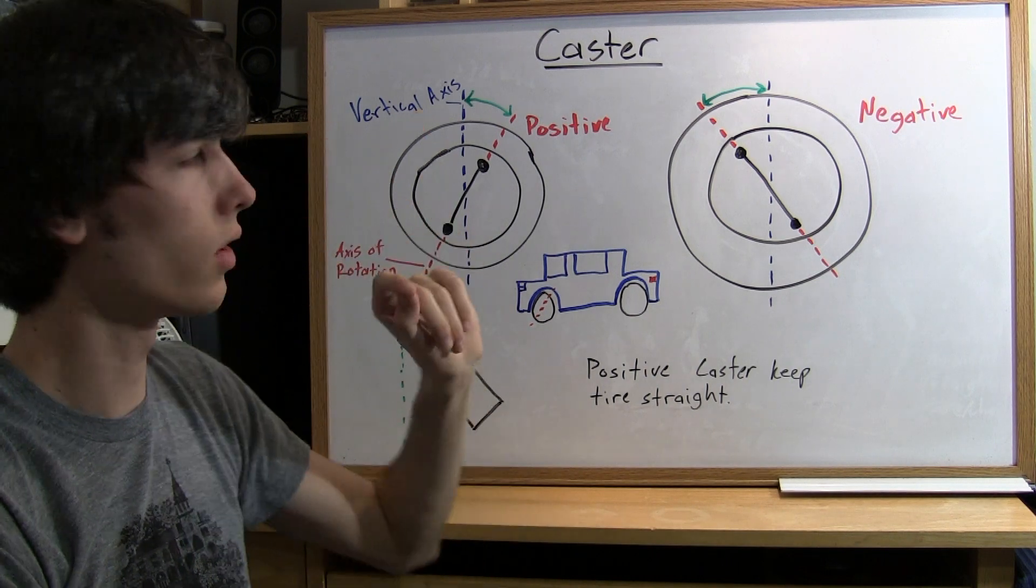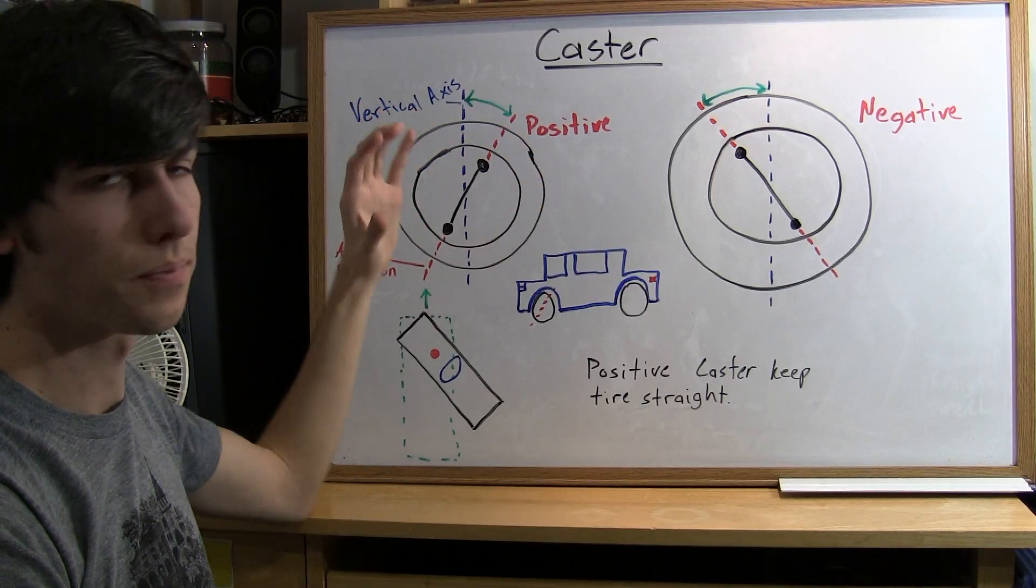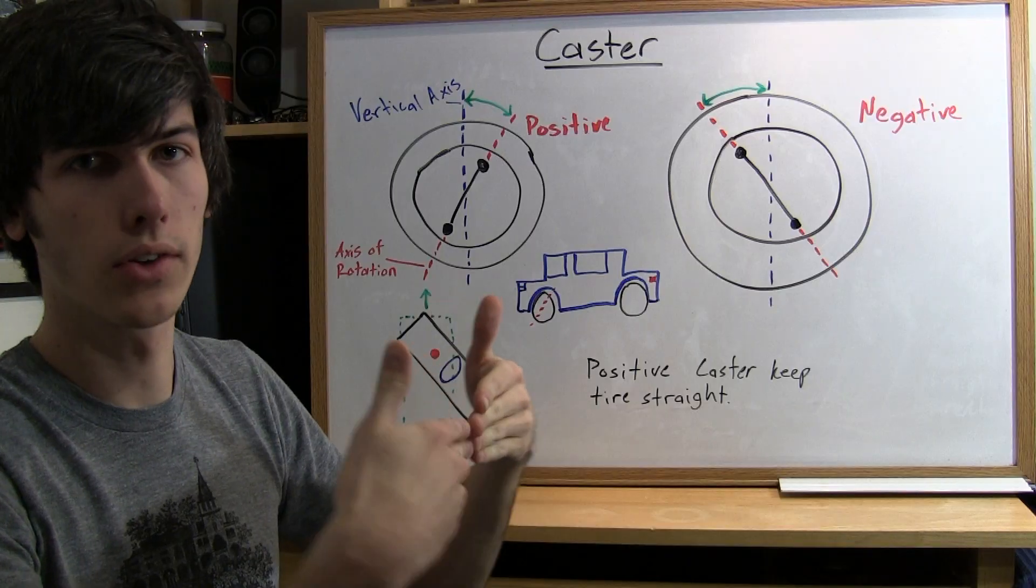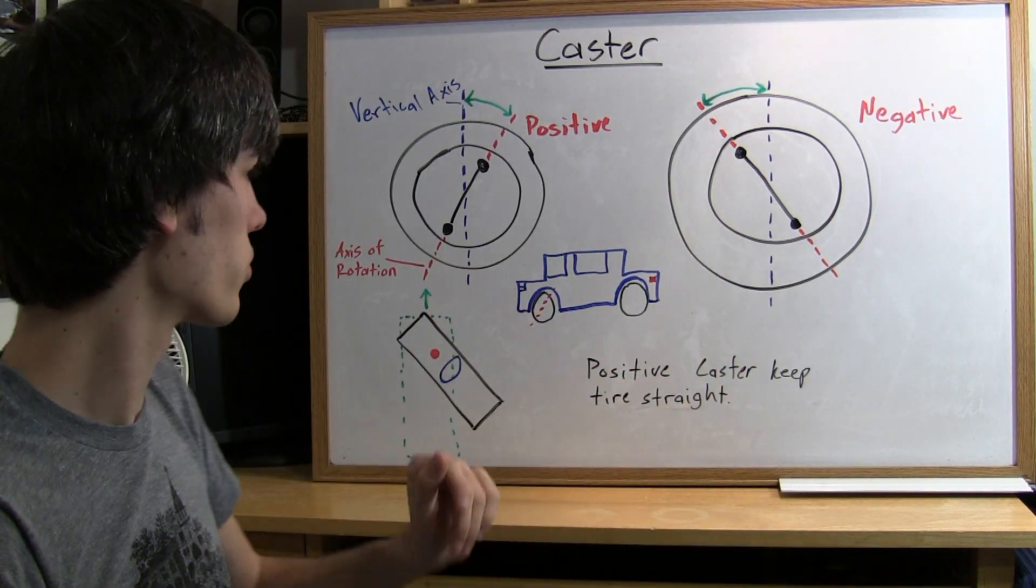As you turn the wheel, and remember these are exaggerated, when you turn the wheel there's going to create a torque and the tire is going to want to straighten out. So when you let go of your steering wheel the car will automatically go straight.